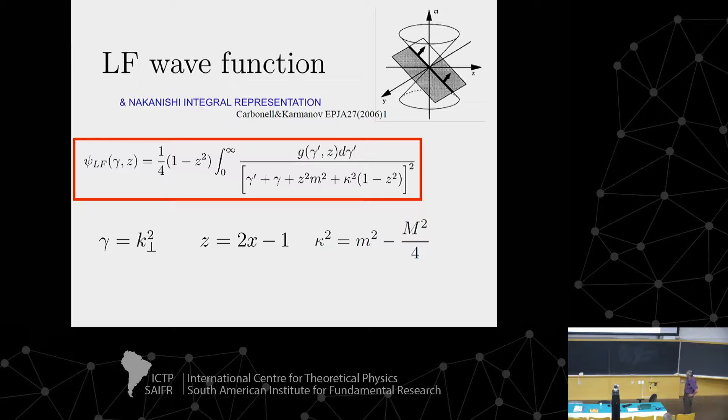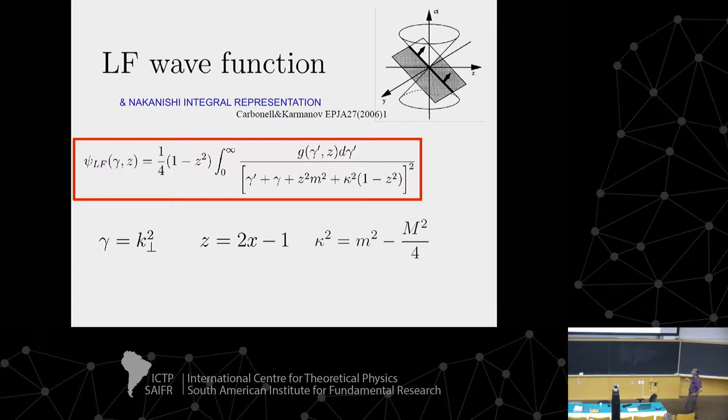The valence appears just by integrating over k-minus. In the case of two bosons, you have the Nakanishi weight function and this squared kernel, where gamma is just the transverse momentum squared. The variable z is related to Bjorken x between zero and one. In this kind of method, one quantity we can compute is the valence probability, and from this we can get, for example, the valence PDF.